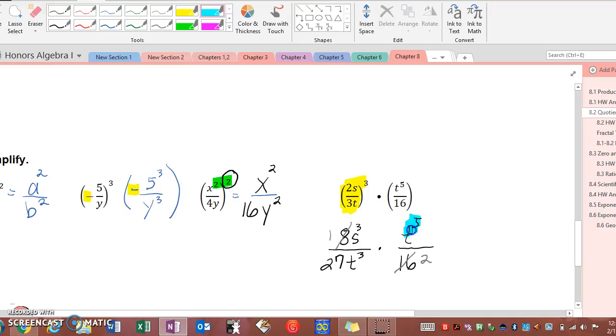Now here we have t to the fifth in the numerator, t to the third in the denominator. So we can cancel out all the t's down here and three of them up here, so that makes t to the second. Because t to the fifth over t to the third equals t to the second.